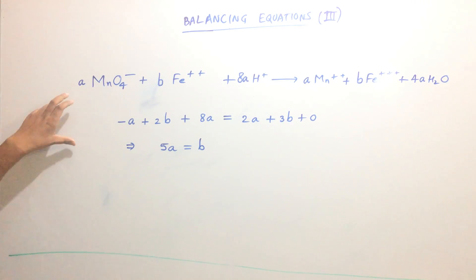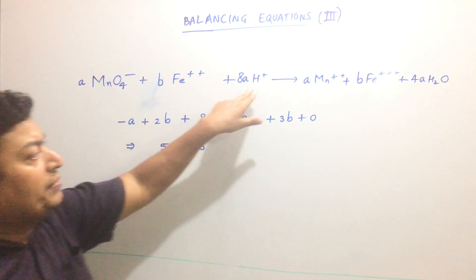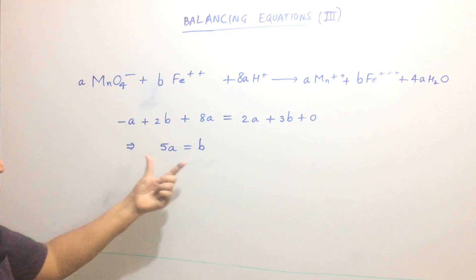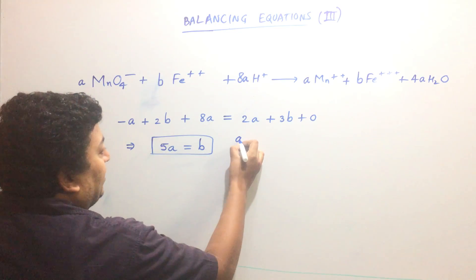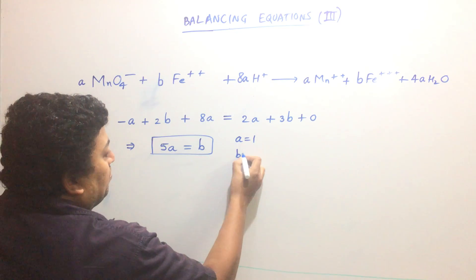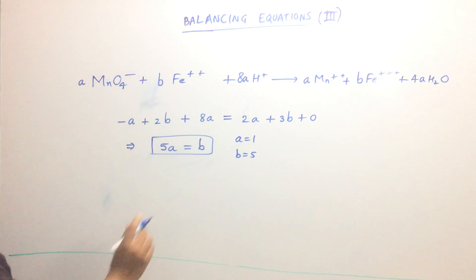We have to make sure all the coefficients become integers and this equation is also satisfied. To satisfy this equation, the minimum A I can take is 1 and minimum B I can take is 5, because then 5 equals 5.